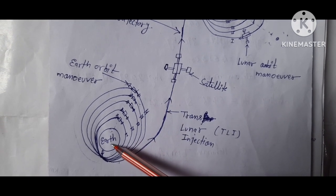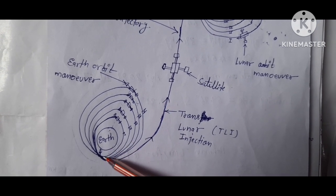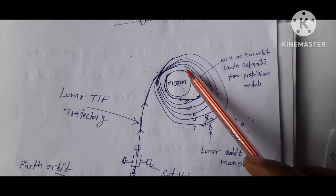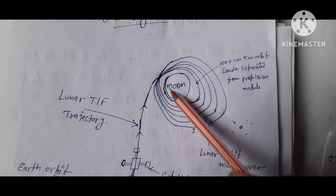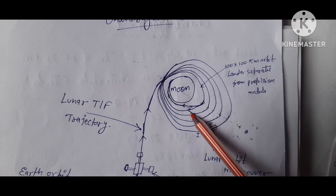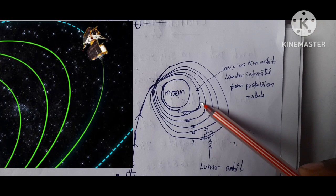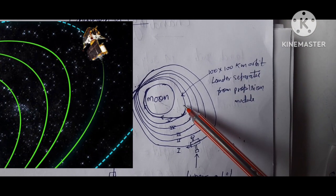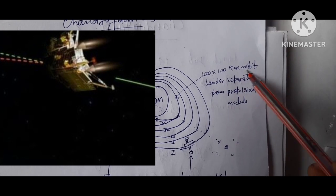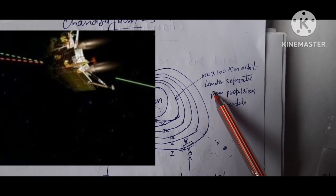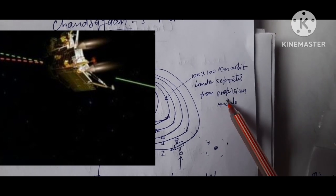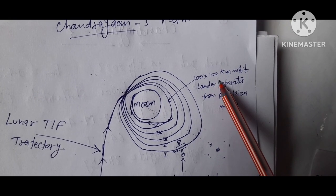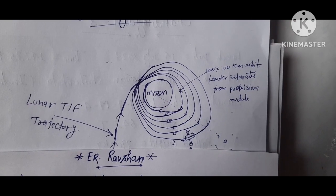In my first video, we talked about Chandrayaan-3 launch from Earth at Sri Harikota, and it goes to moon orbit. After reaching the 100 x 100 km orbit, the lander separates from the propulsion module.